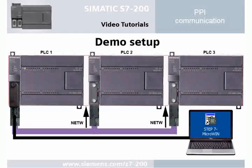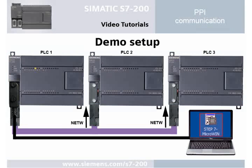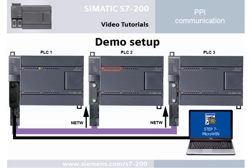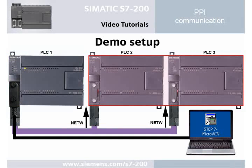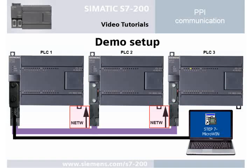As a task, a running light via three PLCs shall be configured in Step 7 Micro/WIN. The running light concerns the respective output byte 0 of the PLCs and occurs bit-by-bit, rising from PLC 1 to 3, and falling in the PLC sequence 1, 3, 2.